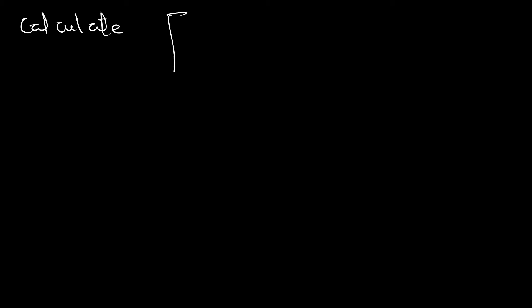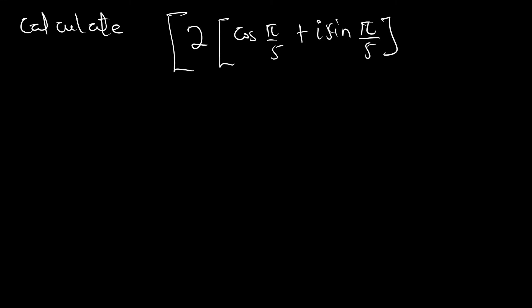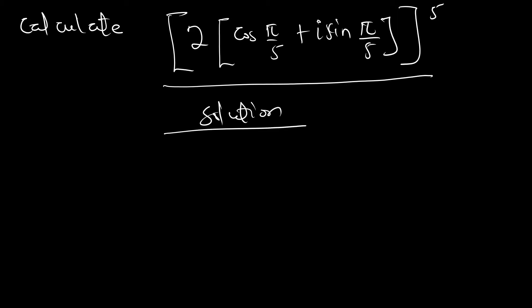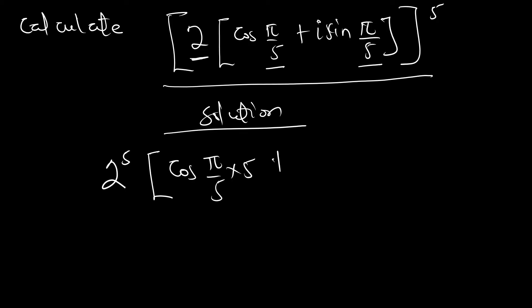Example 1: Calculate 2 multiplied by (cos(π/5) + i sin(π/5)), all to the power 5. This means we've raised the whole expression to the fifth power. The modulus is 2 and the argument is π/5. We raise the modulus to the power: 2 to the power 5, and multiply the power to the arguments: cos(π/5 × 5) + i sin(π/5 × 5).